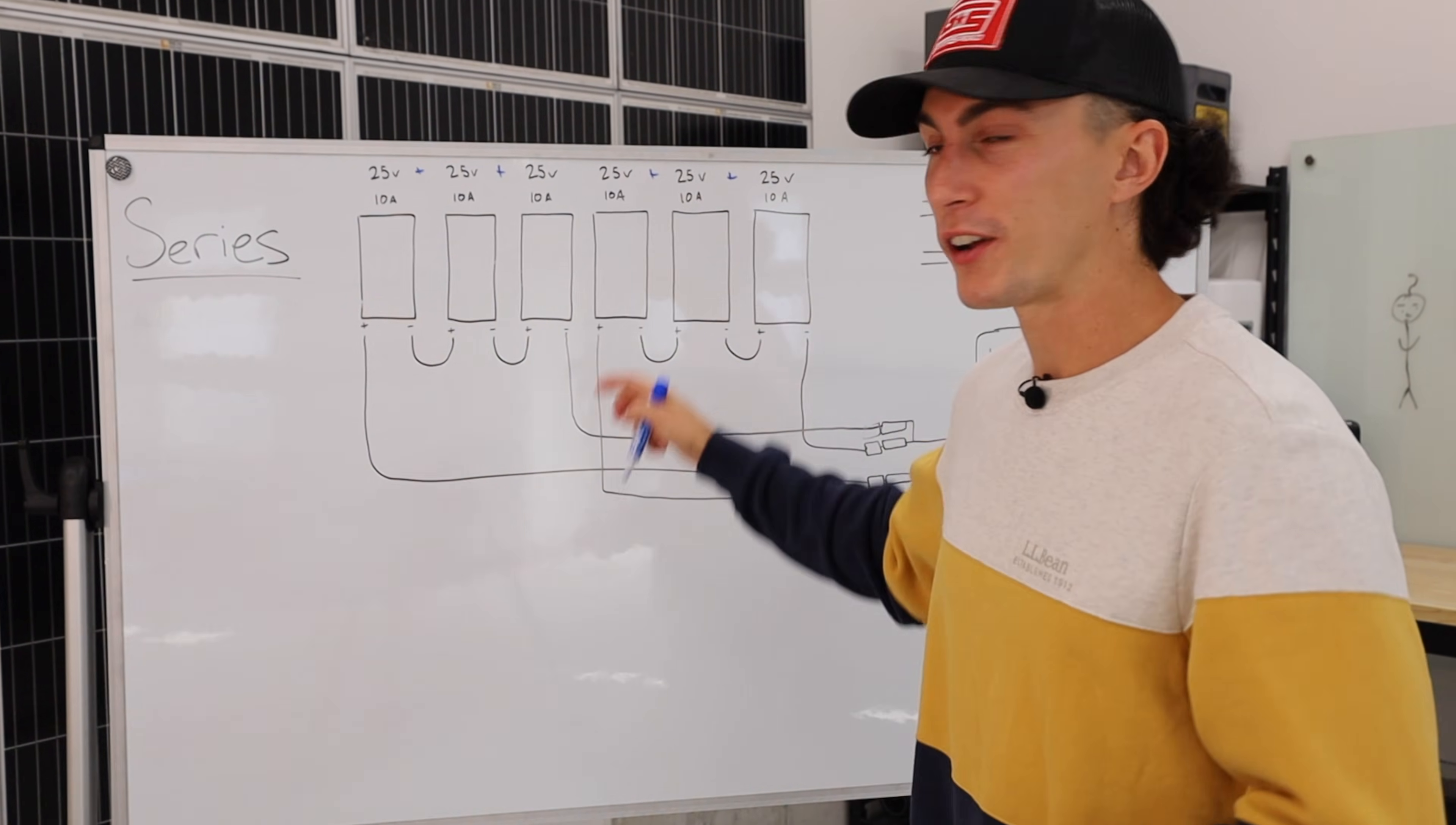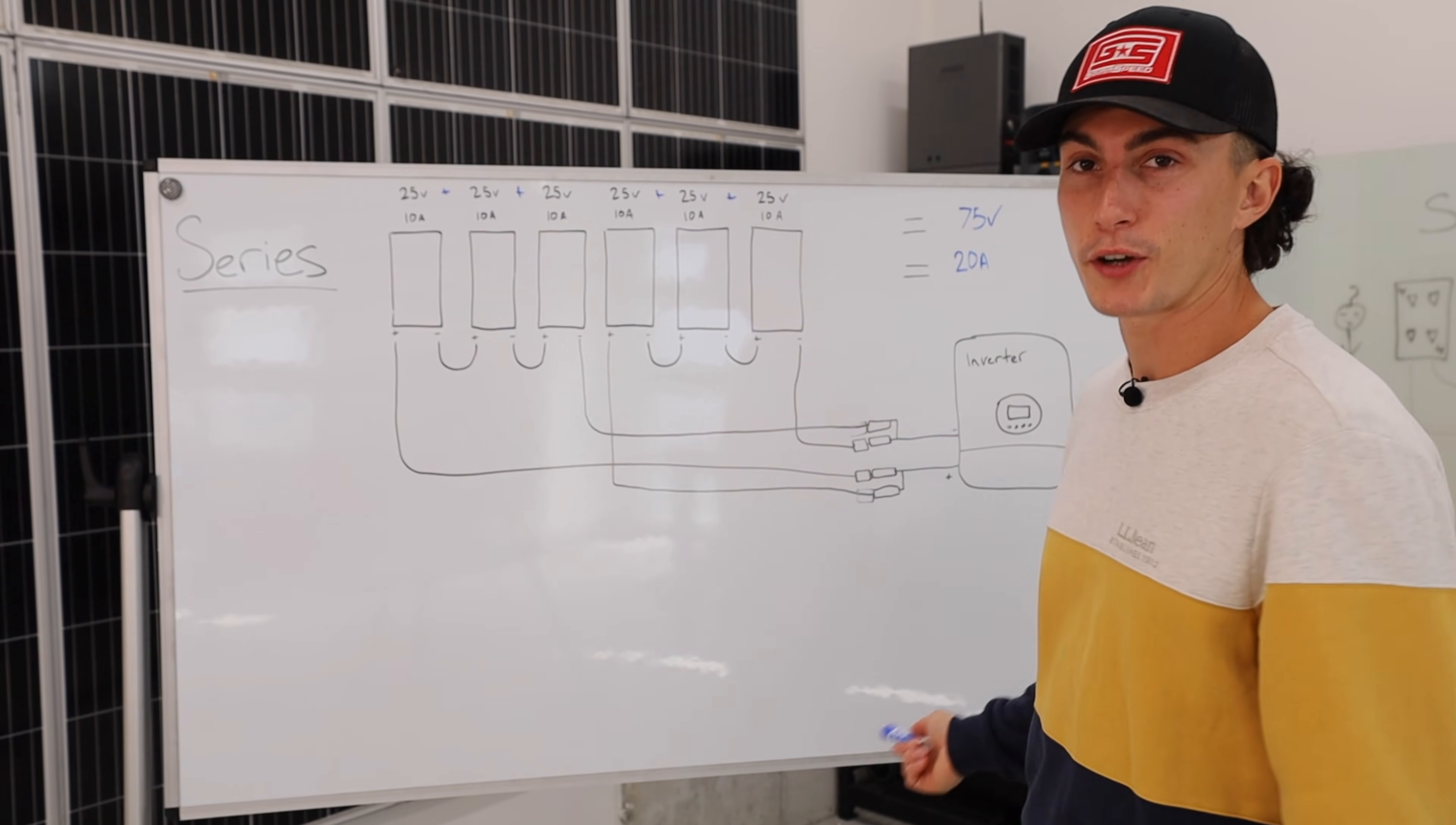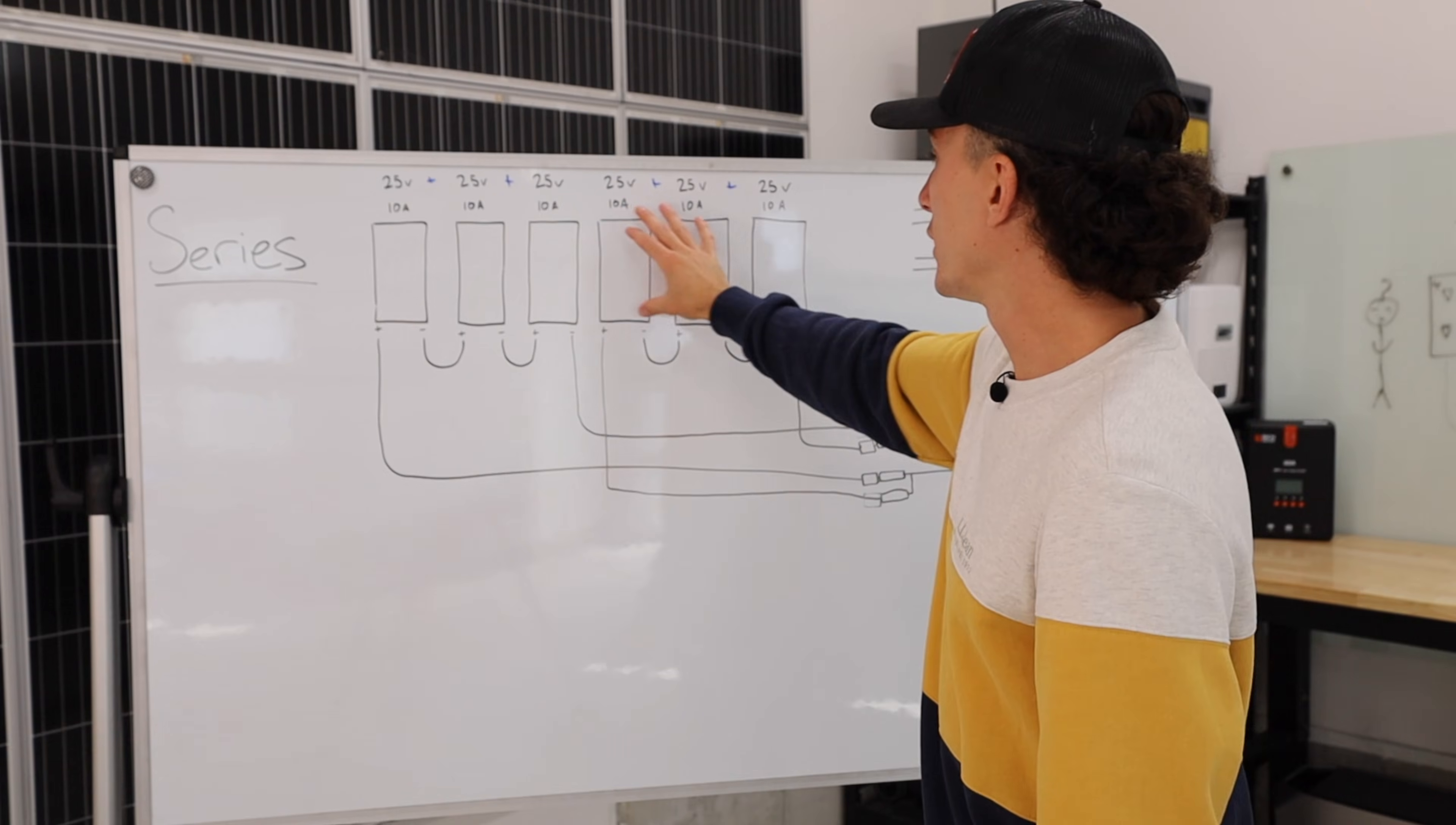Obviously now you're going to need two fuses right here and you're going to need some branch connectors. And the pro is that if you had these on a roof or whatever, if one of these gets covered with shade, these three are now unaffected.